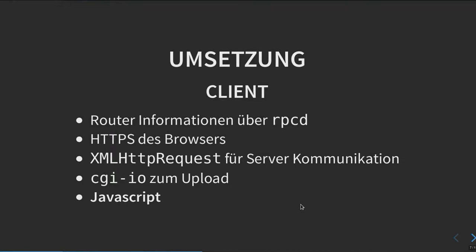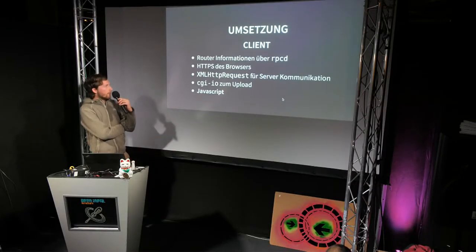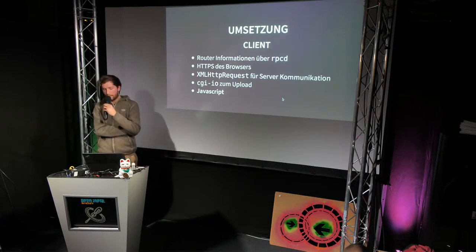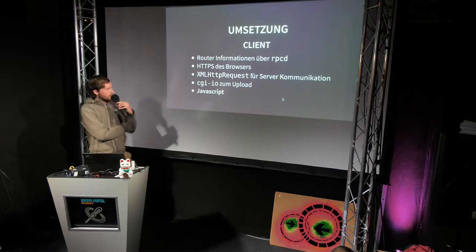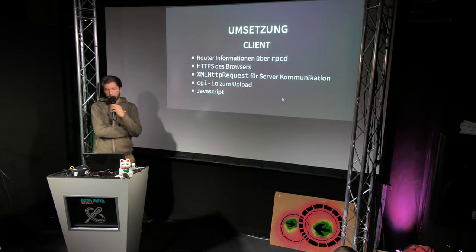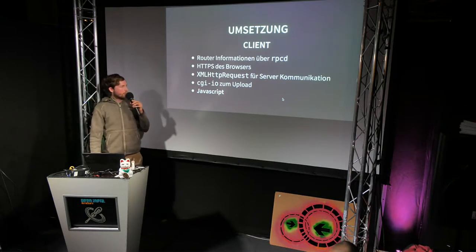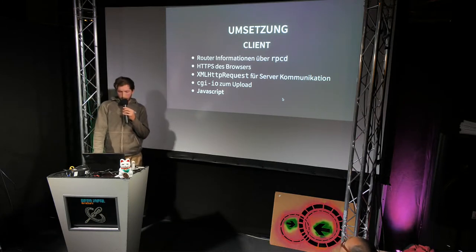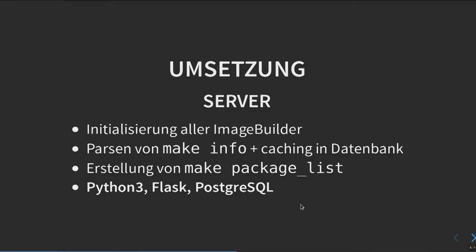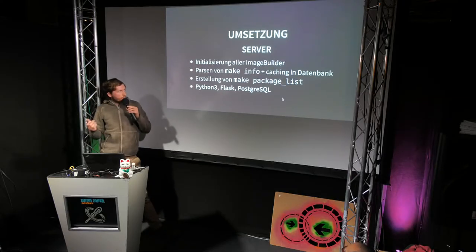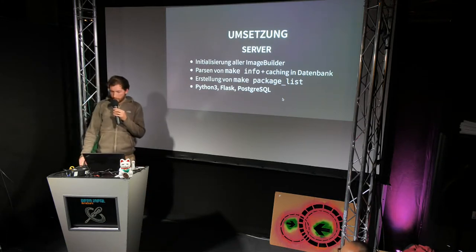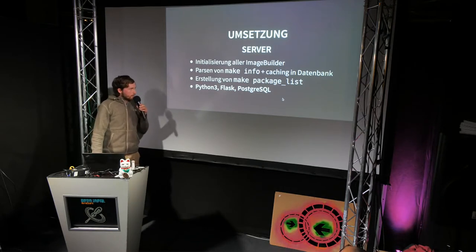After reload of the web interface you can see that the same packages that were installed before are still preserved — so it's not just the stock image that was downloaded. The implementation uses a LuCI app executed in the client browser. I use XMLHttpRequest which is a bit outdated but more compatible. cgi.io is a new package only in snapshots for uploading binary files to the device via API. The whole package is about two kilobytes with no additional framework needed. The server initializes all image files, parses them, and stores them in a database, which is later used to validate image requests and check for unsupported devices or non-existent releases. This is implemented in Python Flask for routing requests and PostgreSQL.